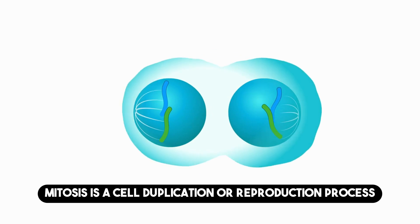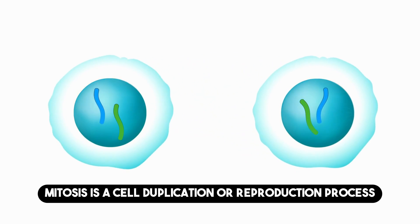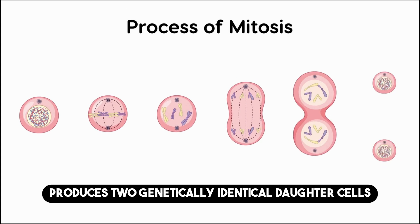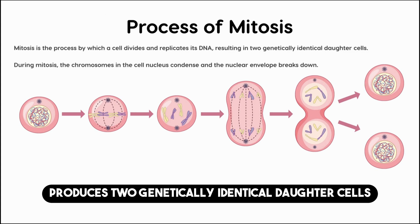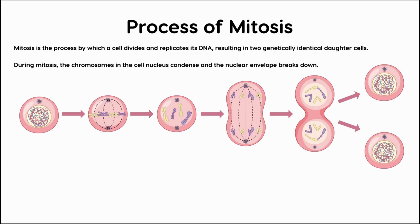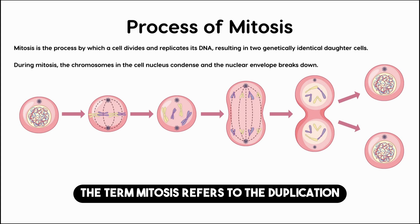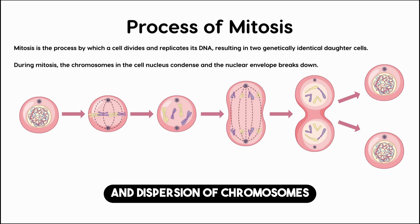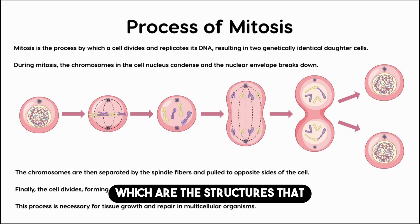Mitosis is a cell duplication or reproduction process in which one cell produces two genetically identical daughter cells. The term mitosis refers to the duplication and dispersion of chromosomes, which are the structures that carry genetic information.